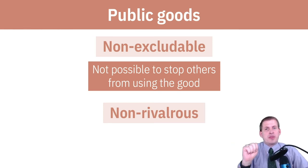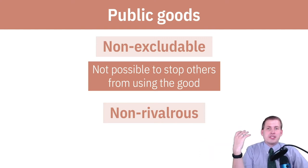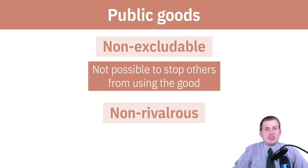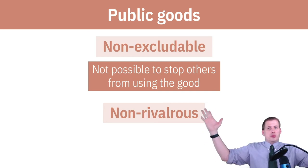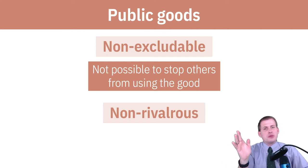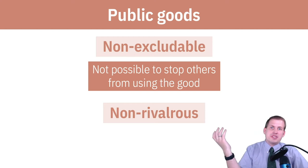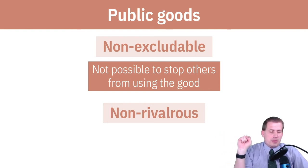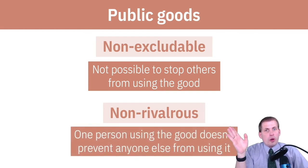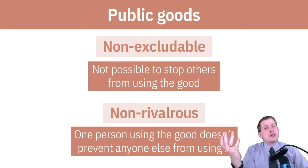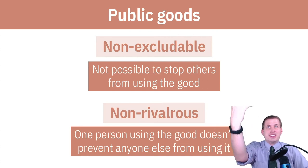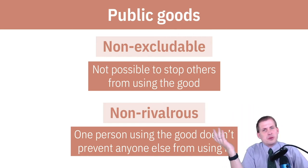A fireworks display on the Fourth of July is non-excludable — you can't stop people from looking up and seeing fireworks. The only way to make it excludable is to build a giant fence around the perimeter where you're launching them, but if fireworks go up high everyone can see them anyway. The non-rivalrous part means that one person using the good doesn't stop others from using it — it doesn't get consumed. With fireworks, me watching one doesn't deplete it so others can't see it.